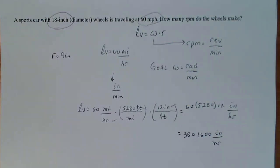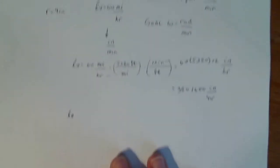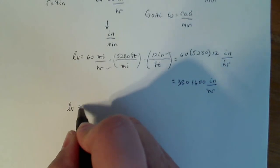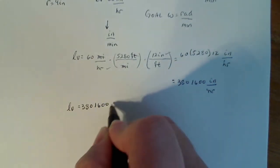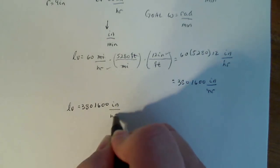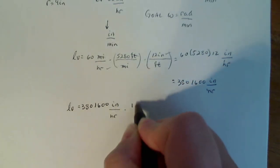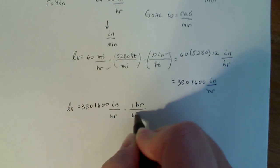Now to continue, I have it in inches per hour, but I wanted it inches per minute. So my linear velocity is 3,801,600 inches per hour. And I wanted in terms of minutes. So I know in one hour there is 60 minutes.